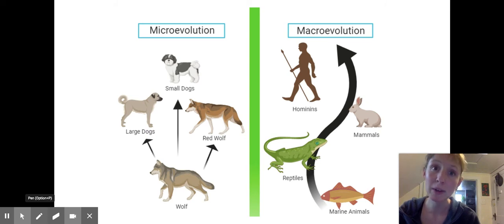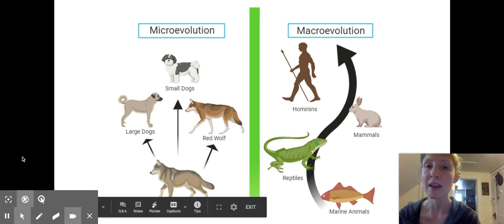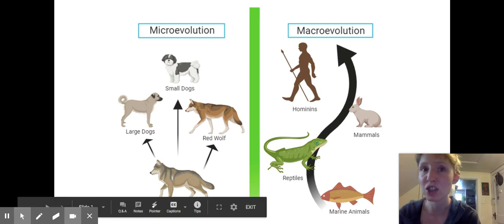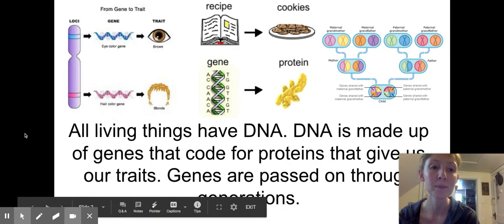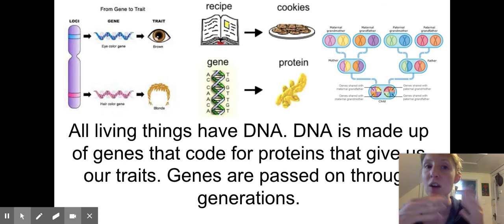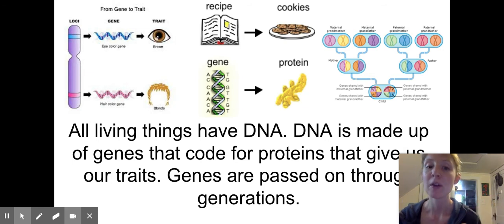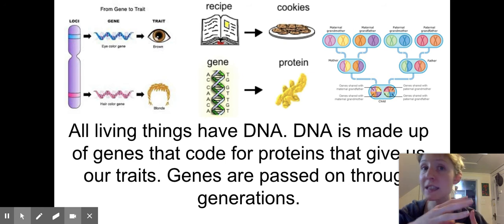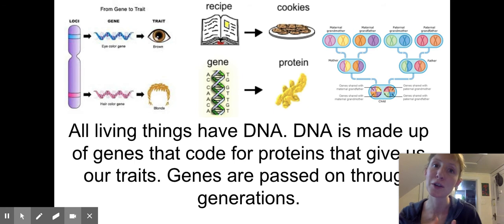This week we are moving from microevolution and talking about macroevolution. Let's review the basis of any change to a population over time. All living things have DNA, which is like a recipe book that carries all the different recipes for all the different proteins that make you up. It's made up of genes that code for those proteins, and those genes get passed on to offspring through generations.